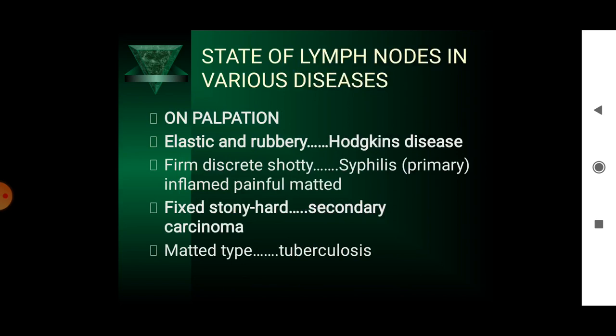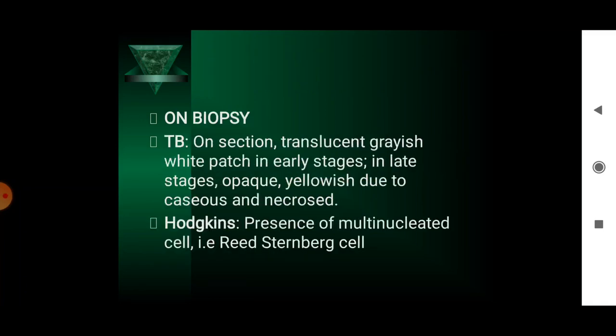The state of lymph nodes in various diseases on palpation: elastic and rubbery indicates Hodgkin's disease; firm, discrete and shotty indicates syphilis; fixed and stony hard indicates secondary carcinoma; matted indicates tuberculosis. On biopsy, TB gives a translucent grayish-white paste in early stages; in late stages it becomes opaque yellowish due to caseous necrosis. Hodgkin's disease shows the presence of multinucleated Reed-Sternberg cells.